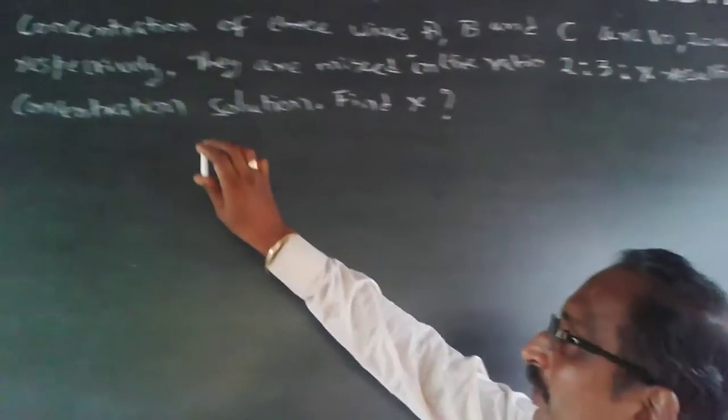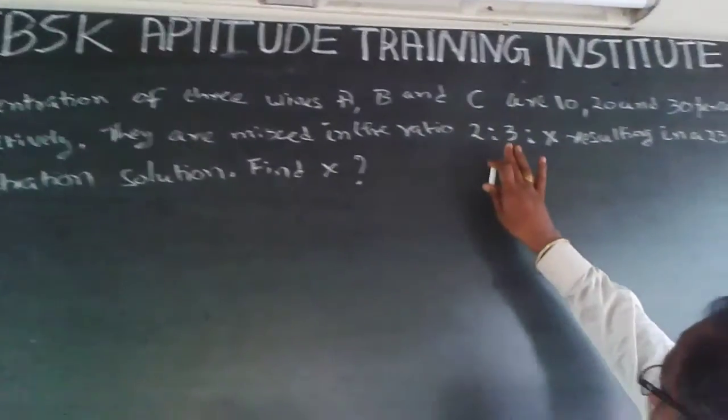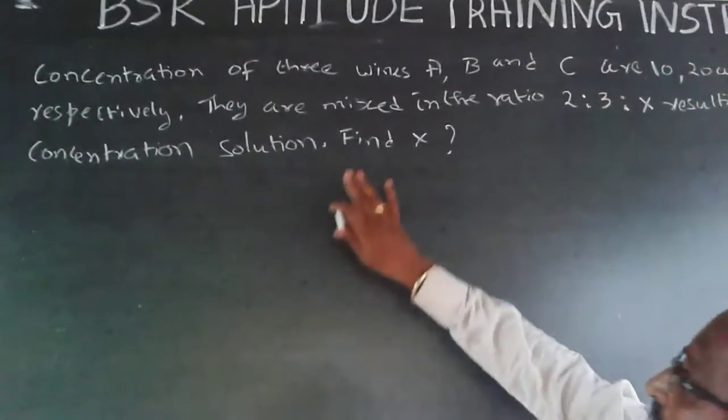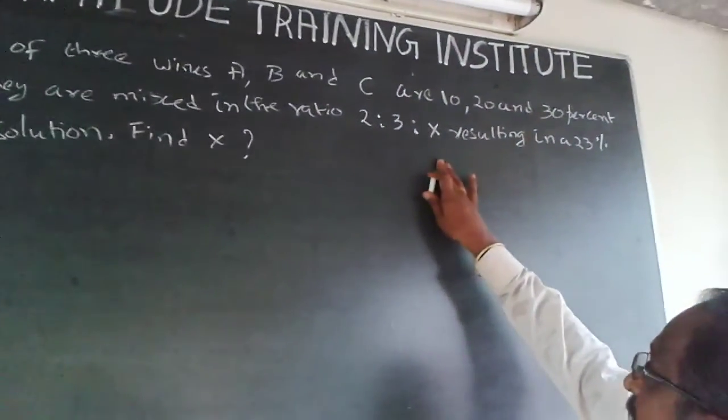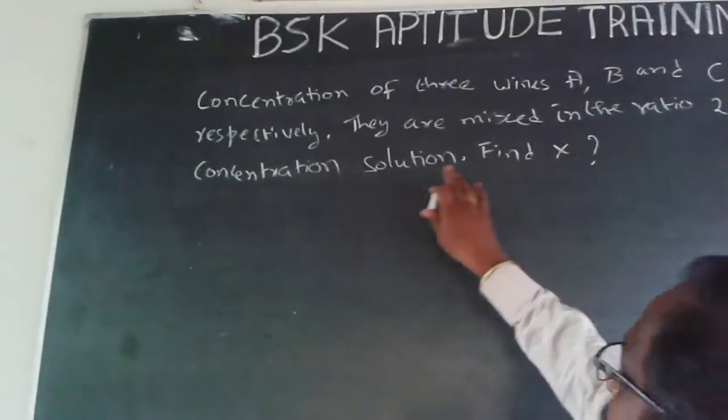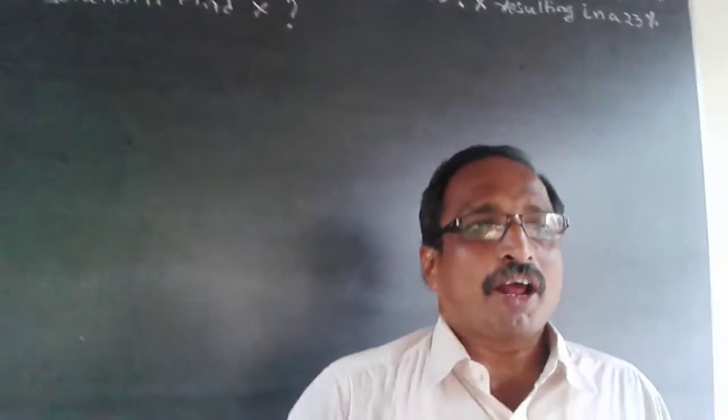The question I'm going to handle now is: concentration of three wines A, B, and C are 10%, 20%, and 30% respectively. They are mixed in the ratios 2:3:x resulting in 23% concentration solution. Find x. This is a quantitative question.